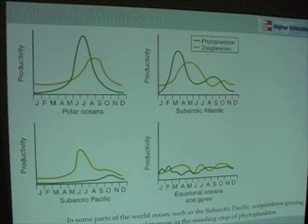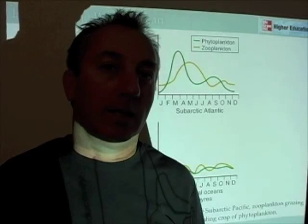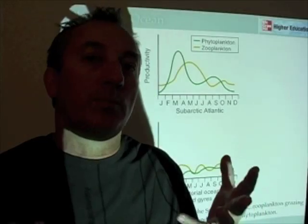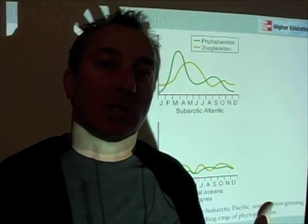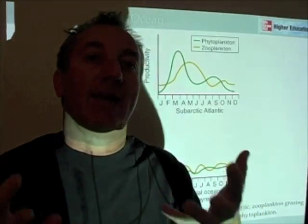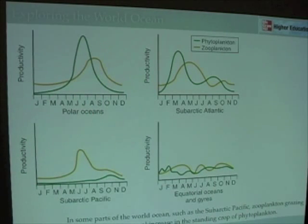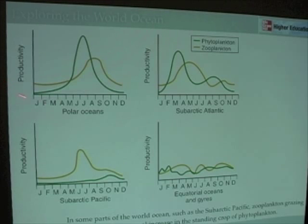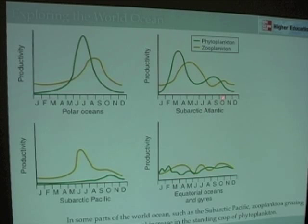Now let's look at polar oceans. In polar oceans, as we discussed in chapter 7, it only gets warm really in the summer — that's really when we have stratification. We really only have one season in polar oceans, and we see that dramatically in this enormous increase of phytoplankton in the summer months. That increase in phytoplankton is followed, about a month or so later, by an increase in zooplankton — one major bloom of phytoplankton and one major bloom of zooplankton, as opposed to the major and minor blooms we see in the subarctic Atlantic. These different rates of production are being controlled by the seasonal variability of sunlight, mostly.